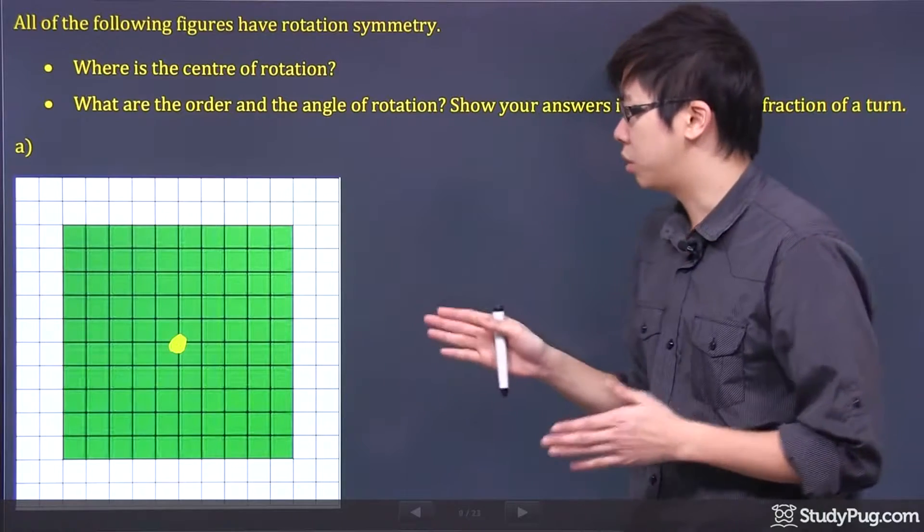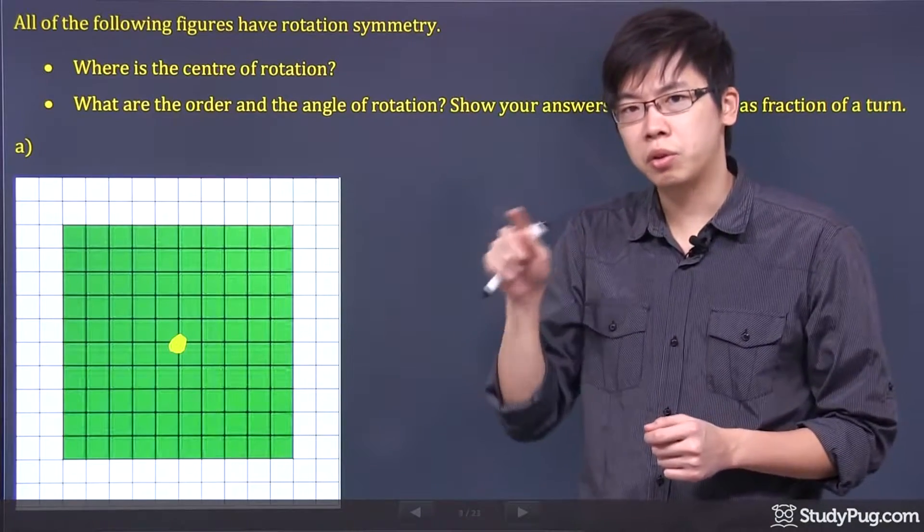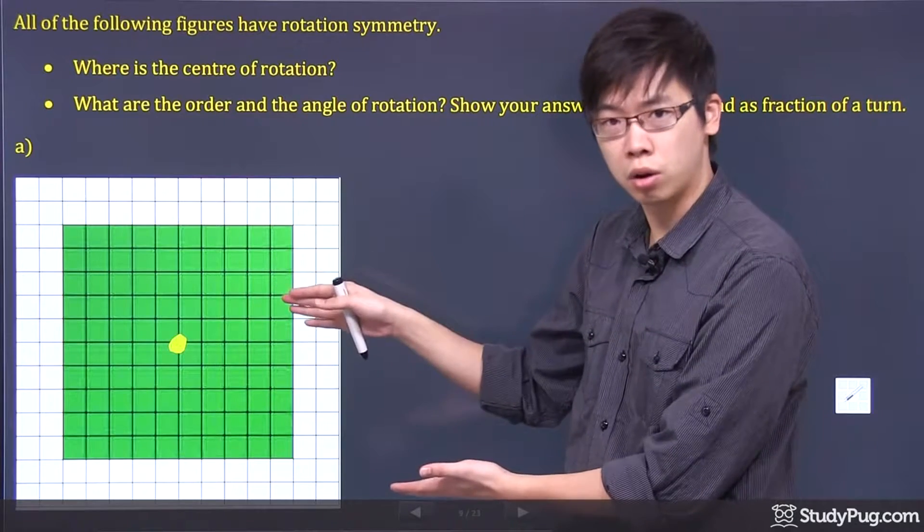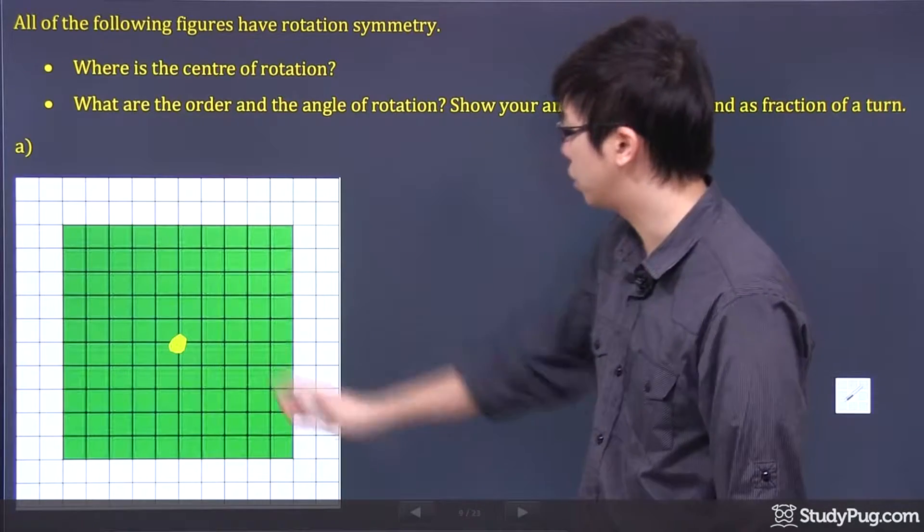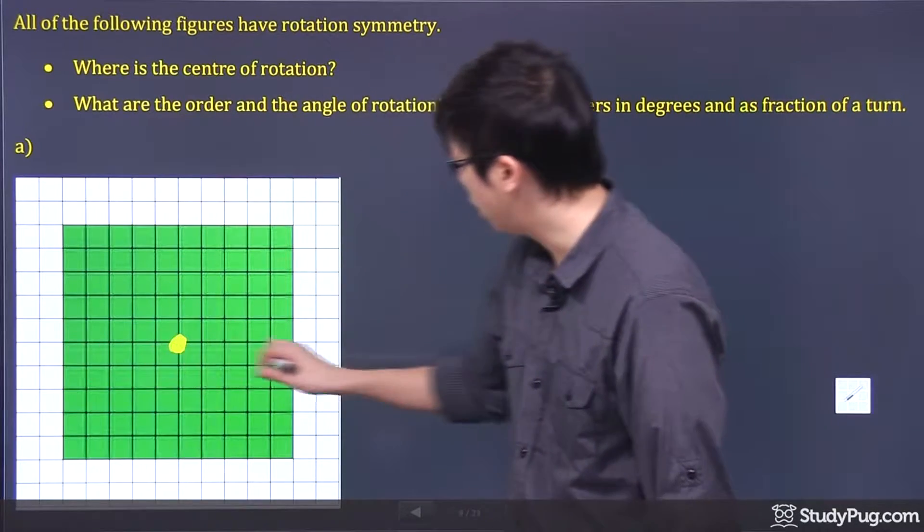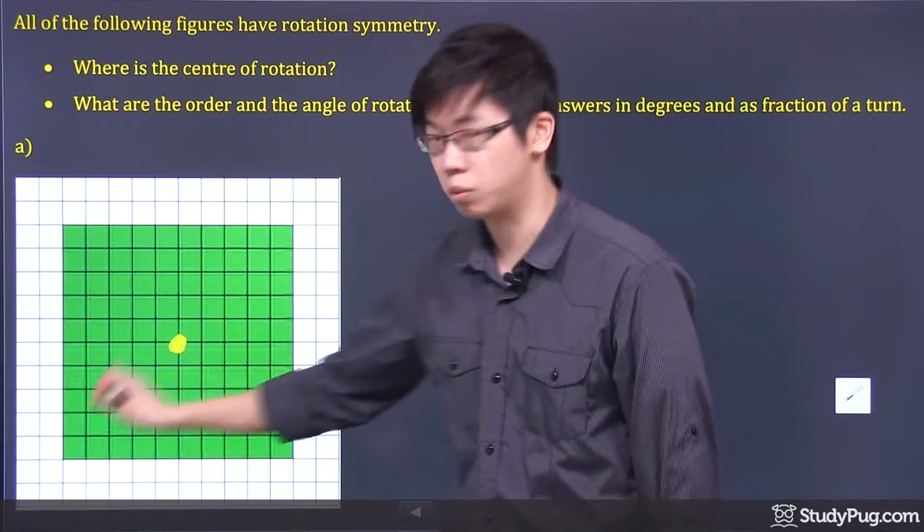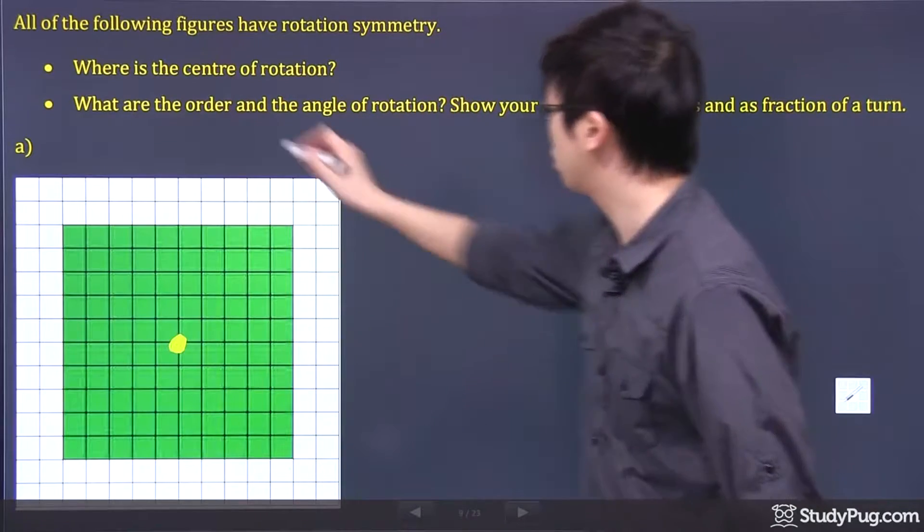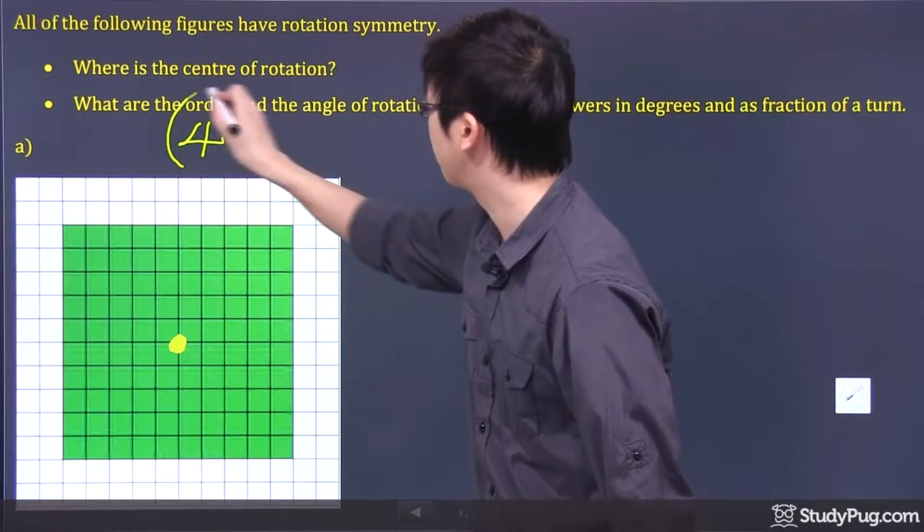The order of the rotation is this. You can actually relate the order to the line of symmetry you have. So if you look at the square right here, you have four symmetrical lines. You have one this way, this way, and this way, and then this way. So there's four lines. So technically, the order of rotation for this question will be four.